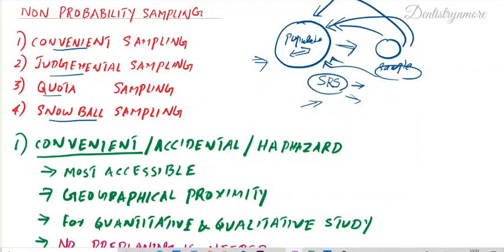In non-probability sampling, there is no random sampling and no proper sample selection from the population, so we cannot extrapolate the result back to the population. But why do we need non-probability sampling? Because many times we are not able to do probability sampling due to various problems. Majority of sampling will be non-probability sampling; probability sampling is feasible only with very small samples of 20, 30, or 50.